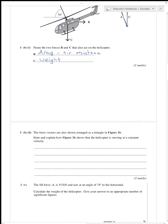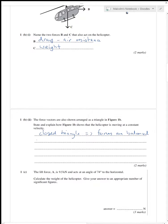So closed triangle implies forces are balanced or forces are in equilibrium, and therefore zero resultant force, which because of Newton's first law implies a constant velocity or zero acceleration.